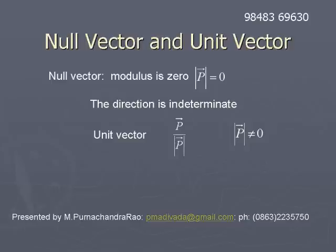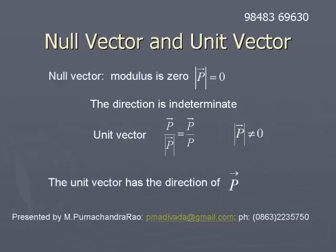To obtain a unit vector, the modulus of p̄ should not be 0. So p̄ divided by the modulus of p̄ gives the unit vector — a vector having magnitude unity along the same direction as vector p̄. The unit vector has the direction of p̄, but its magnitude is 1.